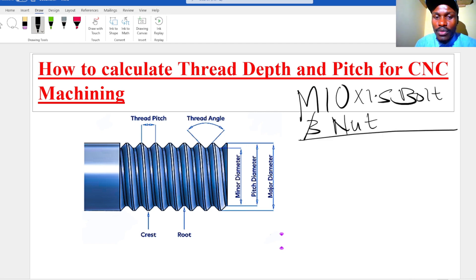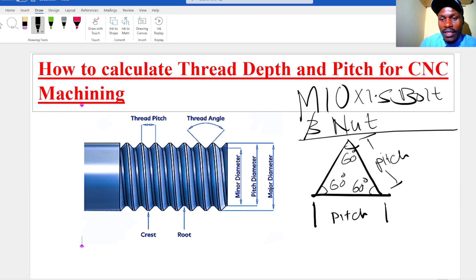For an M10 by 1.5 bolt, you need to know the thread profile, which is obtained from the tool angle. The thread tool is shaped in this format: in the form of an equilateral triangle with an angle of 60 degrees. The sides of this triangle are assumed to be the pitch distance, and the thread tab is assumed to be the distance from the base to top height, which is the crest.